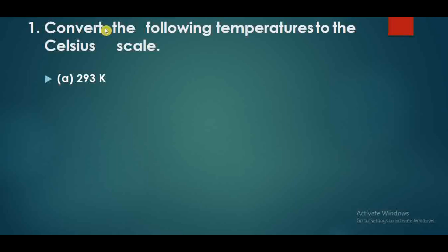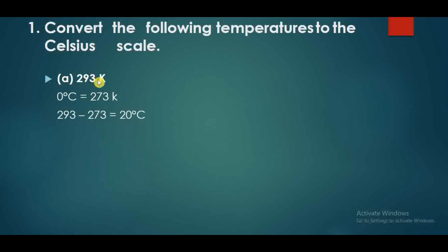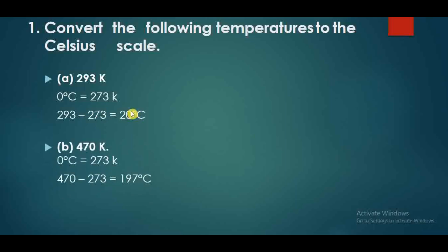Our first question is: convert the following temperatures to the Celsius scale. We have to change Kelvin to Celsius. We know that 0 degree Celsius is equal to 273 Kelvin. So if we need to change Kelvin to Celsius, we need to subtract 273 from the Kelvin value. The answer will be minus 20 degrees Celsius. For the next value, subtracting from 273 Kelvin, our answer will be minus 197 degrees Celsius.